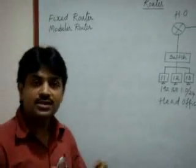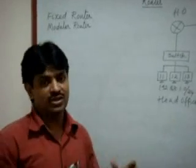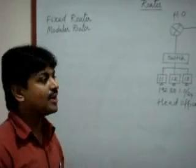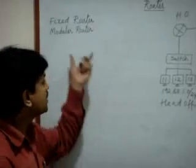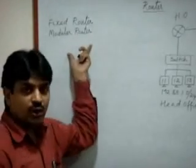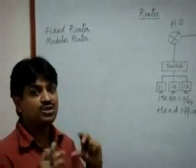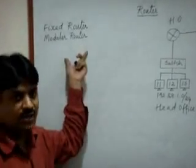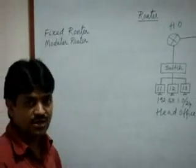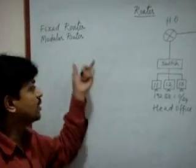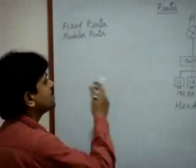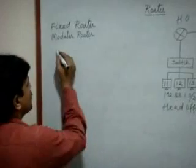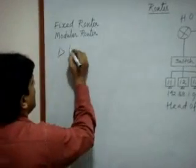In a fixed router, all components are fixed — we cannot replace or add extra interfaces. In a modular router, components and interfaces come in modules, so we can replace interfaces and add extra interfaces according to requirements. All router components are divided into three categories: LAN interfaces, WAN interfaces, and administrative interfaces.